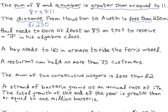Paul needs to earn at least an 85 on his test to receive a B in his algebra class. We let x equal Paul's test grade. We know that x needs to be at least 85 — the rest is just extra information. When we're talking about 'at least,' we're talking about greater than or equal to. His grade can be 85, so we have an equal sign, but it has to be greater than or equal to 85. So x ≥ 85.